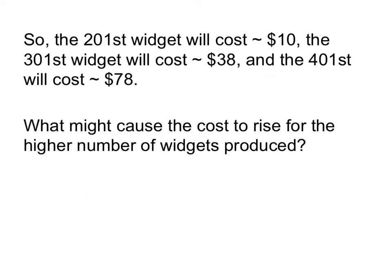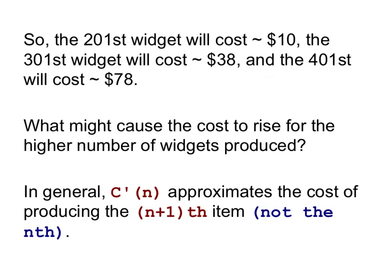Now you may notice that these production costs are increasing. At 201, it costs $10 to make that guy. For the 301st, it costs 38. For the 401st, it costs 78 just to produce those items. So what might cause these costs to rise for a higher number of widgets produced? Well, things like overtime, extra shipping costs. When you rent a truck for shipping, as soon as you fill that truck up, you need to rent a new truck. That next item has a far higher cost to your company than the one before it because you have to rent a new truck. There are other things that affect the cost as well.